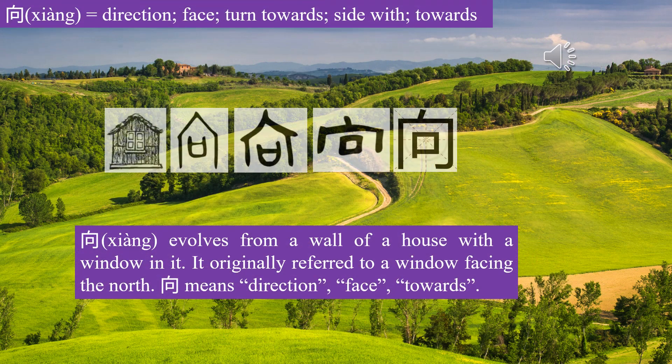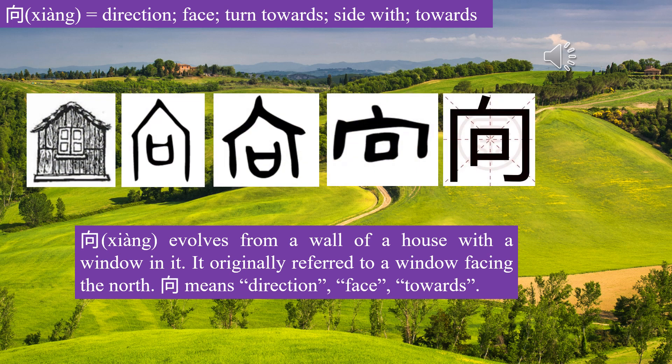Character 向 (Xiàng) evolves from a wall of a house with a window in it. It originally referred to a window facing the north. 向 means direction, face, towards.